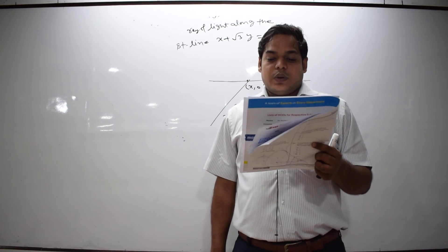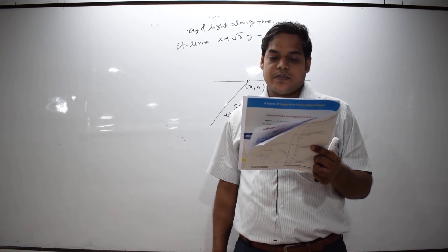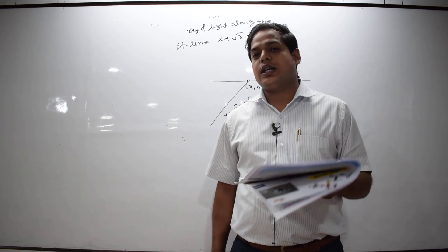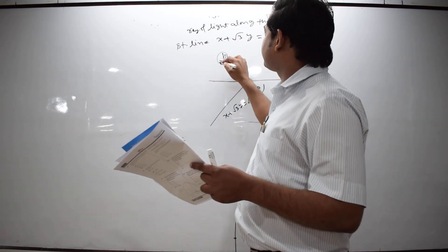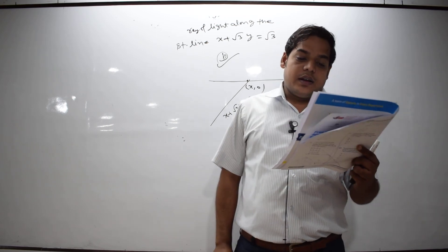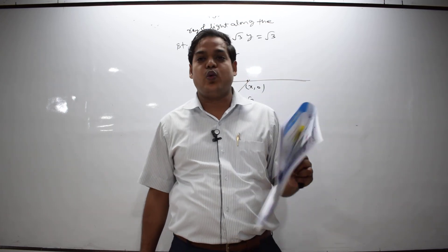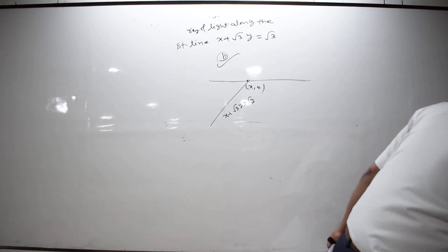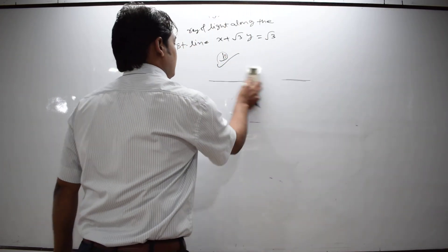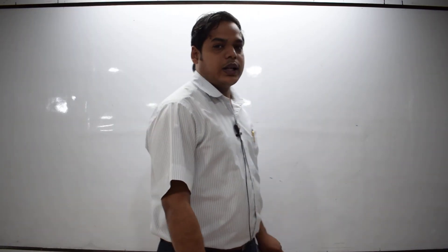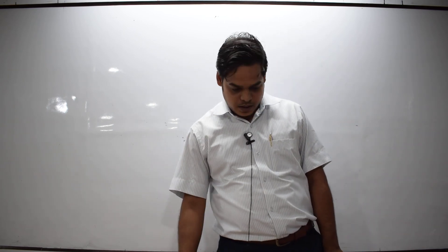Question number 17: For A > B > C > 0, the distance between (1, 1) and the point of intersection of the lines is less than 2√2. This is a very interesting question. Thanks, class — we will discuss some more questions in the next class.